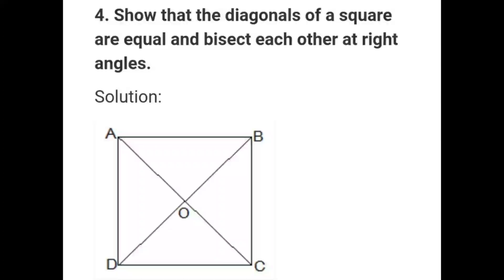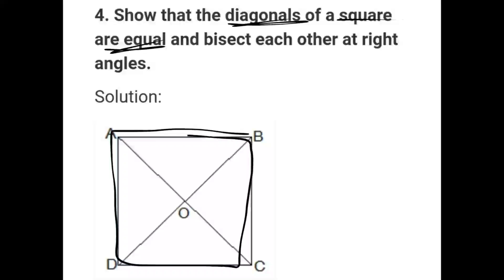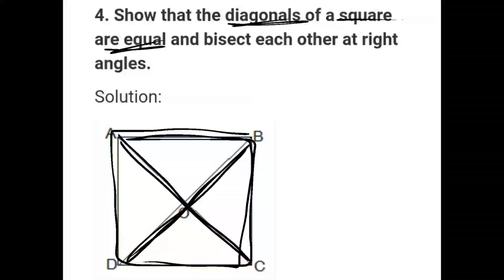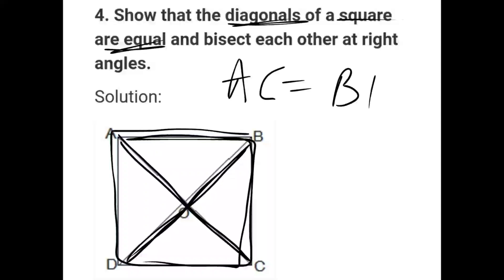Let's show that the diagonals of a square are equal. This is a square — the diagonals are equal. So first of all, let's draw a square. Let's make diagonal AC, then make diagonal BD. I will show that line AC is equal to BD.